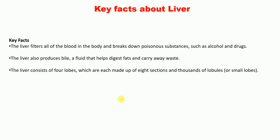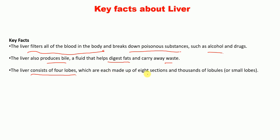The key facts about the liver: first, the liver filters all the blood in the body — it acts as a sieve and breaks down poisonous substances such as alcohol and drugs. Second, the liver produces bile, a fluid that helps digest fats and carry away waste. Third, the liver consists of four lobes, which are made of eight sections and thousands of lobules.